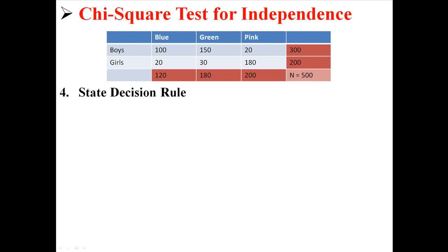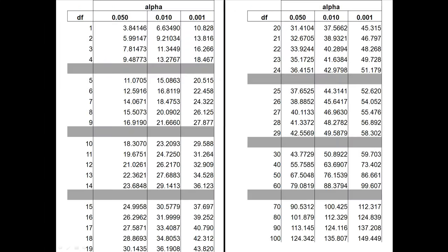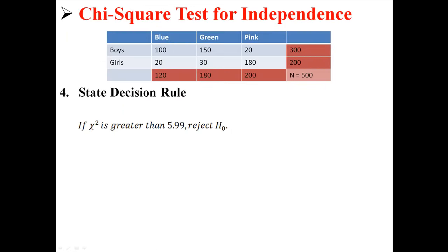And that is how we will find our decision rule. We are going to go to our chi-square table, and using alpha .05 and two degrees of freedom, we find a critical value of 5.99147. So our decision rule is, if the calculated chi-square is greater than 5.99, we are going to end up rejecting the null hypothesis.